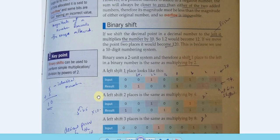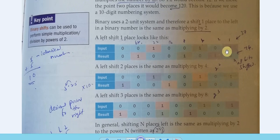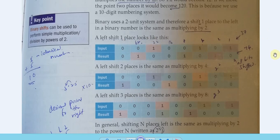Binary shift is basically moving the bits to the left or right so that you can perform multiplication or division. The positional value increases going left — 1, 2, 4, 8, 16, 32, 64 — and decreases going right. So if you move a bit to the left, that's a multiplication; if you move a bit to the right, that's a division.